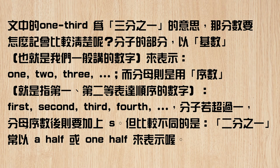三分之一是 one-third，那三分之二呢？特别注意要是 two-thirds。为什么后面变 thirds？原因是只要分子超过一以上的话，分母的部分要加上 s。所以分子是 two，分母是 third，因为分子超过一，所以是 two-thirds。Two-thirds of the earth is covered by water。先记得：三分之一 one-third，三分之二 two-thirds。